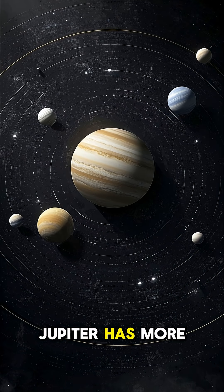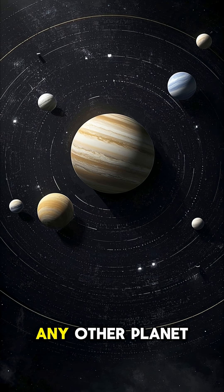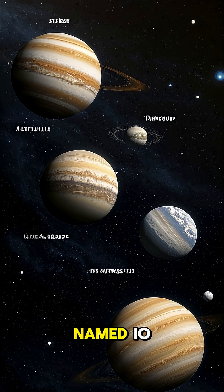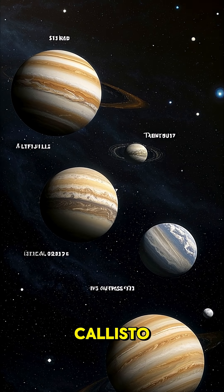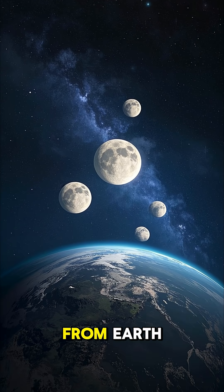Number three, Jupiter has more than 75 known moons. That's more than any other planet in the solar system. And the largest four moons are named Io, Europa, Ganymede, and Callisto. They're so big that they can be seen with the naked eye from Earth.